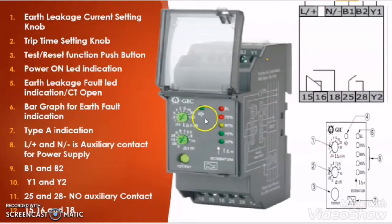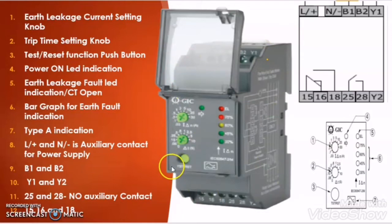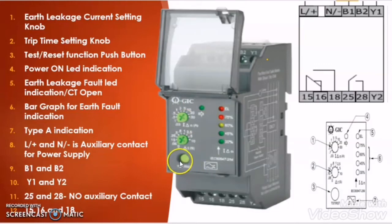The third thing which you will find on the earth leakage relay is a test and reset function push button. With the help of this button you can reset the earth leakage relay. Suppose the earth leakage relay has tripped due to an earth leakage fault — by pressing this reset button we can reset it. Moreover, from the same test and reset button we can check the correctness of our control wiring. In some ELR models the test and reset button are two different buttons, but some manufacturers provide them as one combined button.